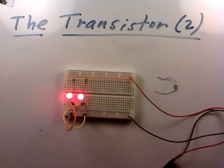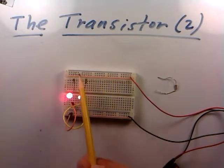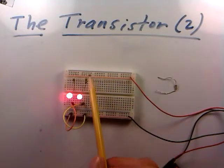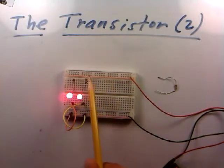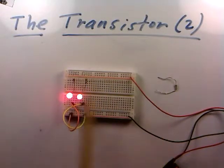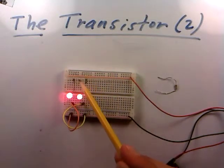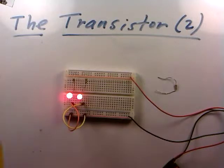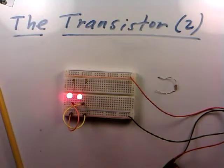Whether you think about it in terms of Ohm's law or just be comfortable with the idea: we've got nine volts across each resistor-LED sequence. The LEDs look like they're about equal brightness — and why wouldn't they be? Both have nine volts across them, both resistors are exactly the same, both LEDs are exactly the same. Why wouldn't they glow at the same brightness? And indeed they do.